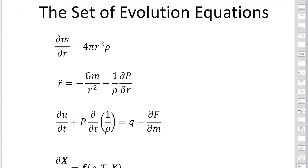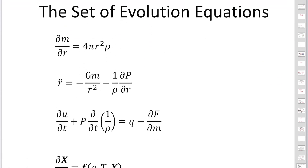Finally, we have the four equations to describe stellar evolution: conservation of mass, conservation of momentum, energy conservation, and the change of elemental composition. These four equations are the important equations to describe stellar evolution. This is the end of this session. Thank you.